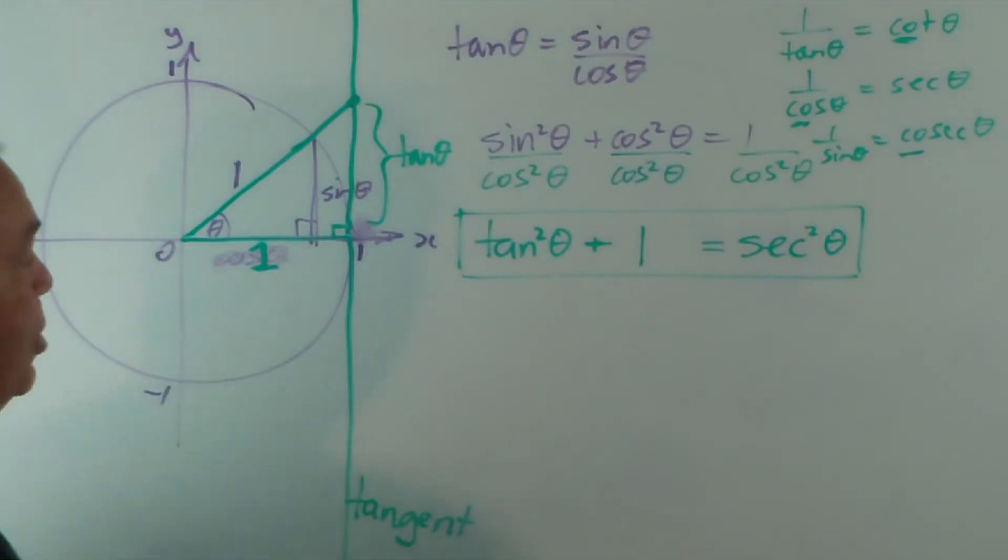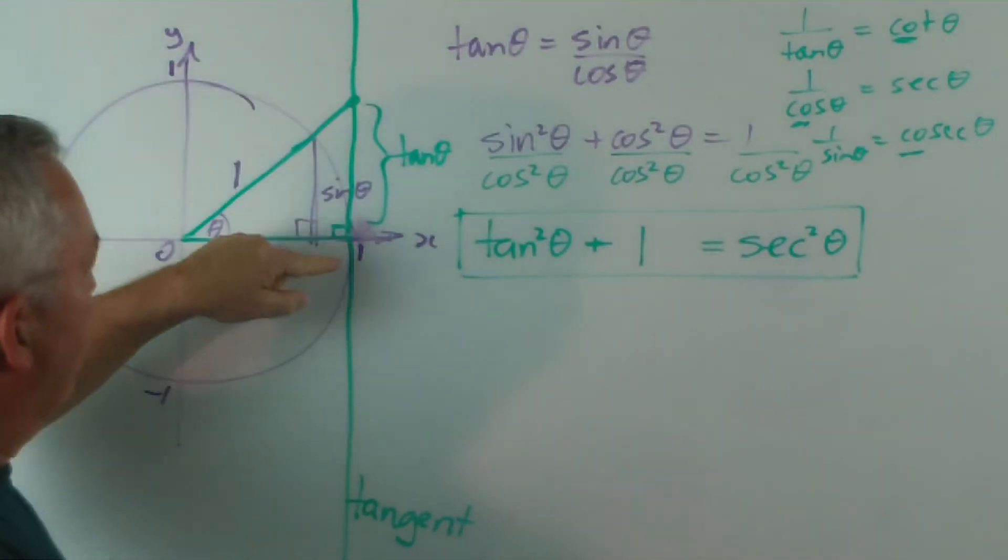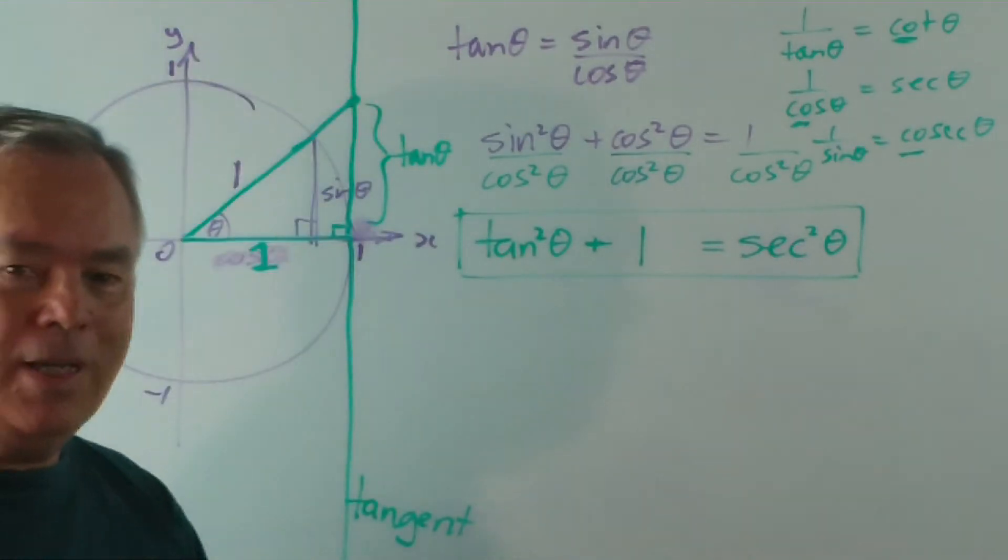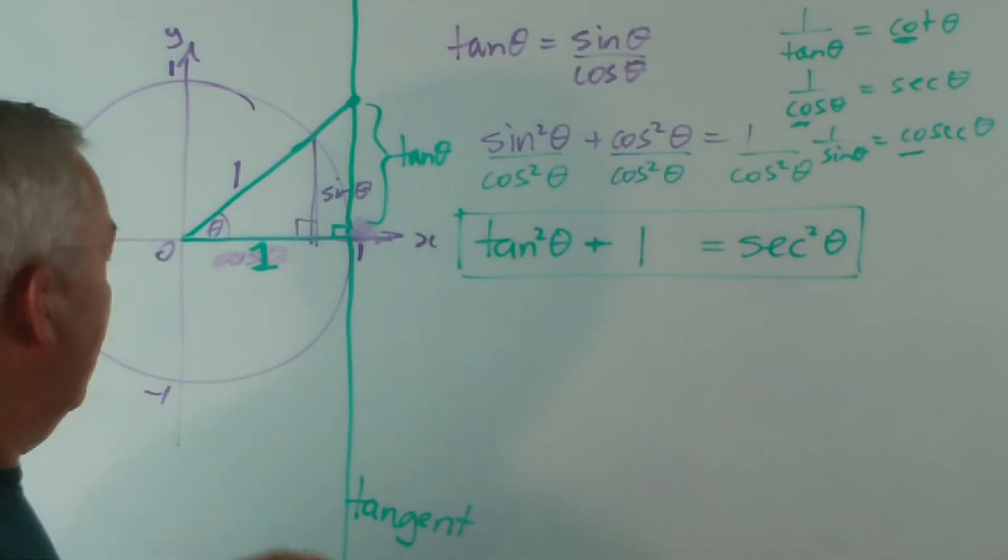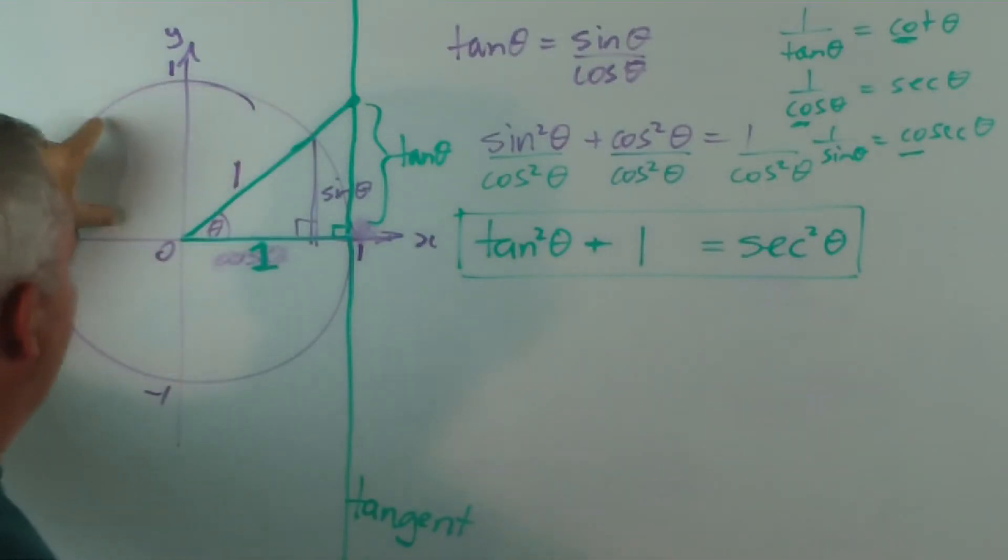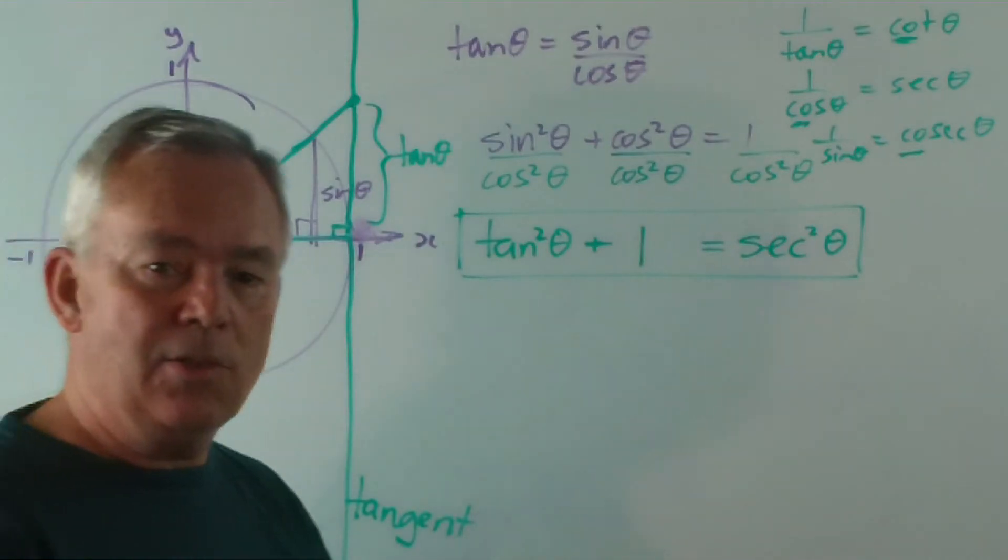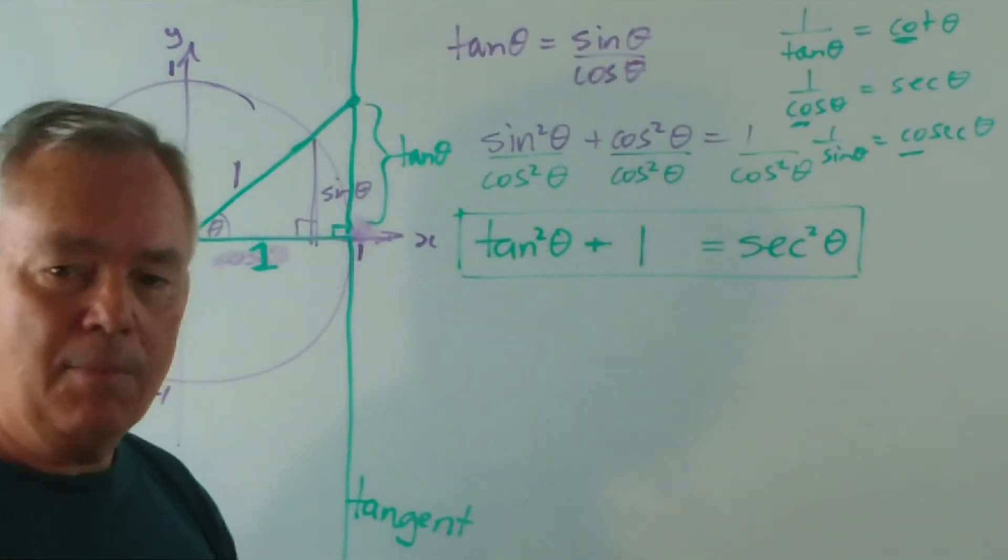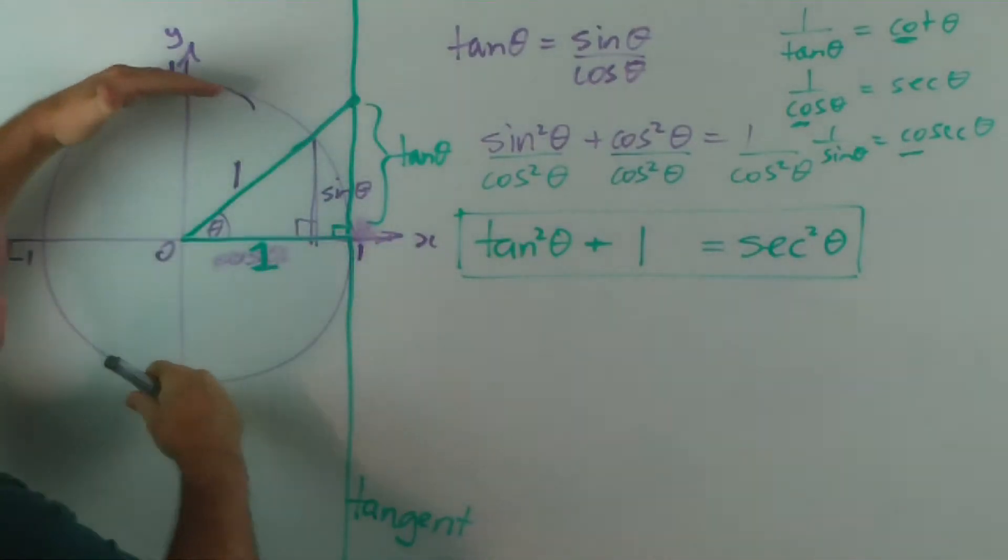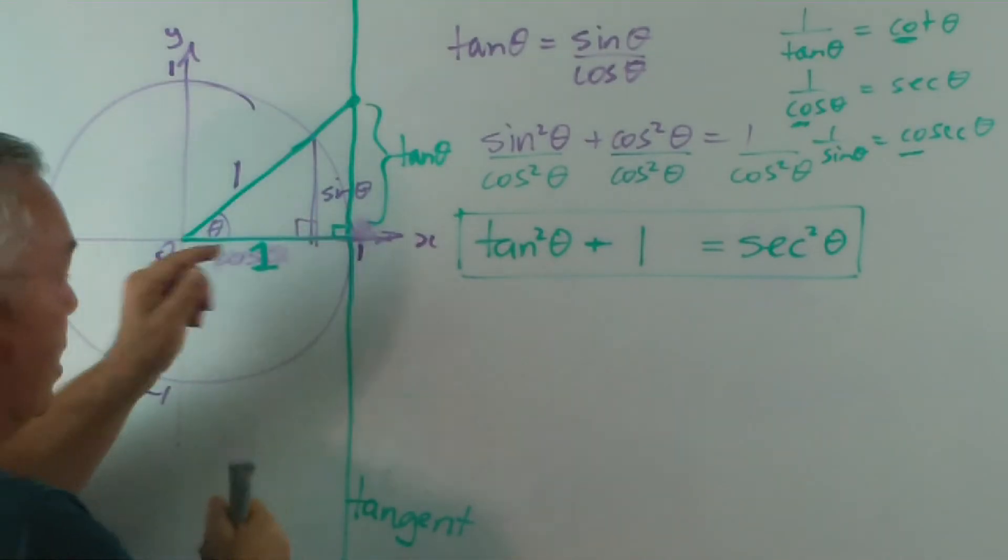So now we can actually imagine, as this angle changes, we can imagine this point moving up the line. And as you can see, it's no longer confined inside the circle. The sine value can never get bigger than one or less than minus one because it's the height of the triangle. But as long as that triangle's inside the circle, the sine value will never escape that plus one to minus one range. And neither will the cosine, but the tangent's different.